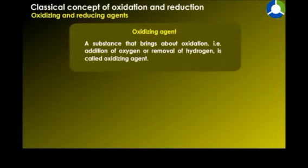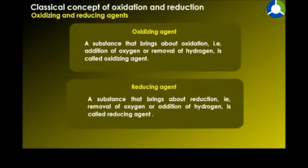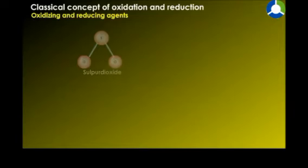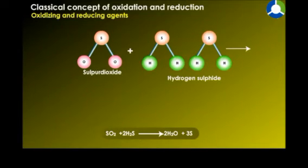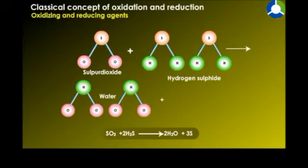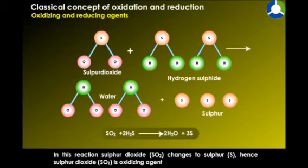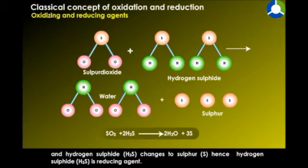A substance that brings about oxidation — that is, addition of oxygen or removal of hydrogen — is called an oxidizing agent. A substance that brings about reduction — that is, removal of oxygen or addition of hydrogen — is called a reducing agent. For example, in SO₂ + 2H₂S → 2H₂O + 3S, sulfur dioxide is the oxidizing agent and hydrogen sulfide is the reducing agent.